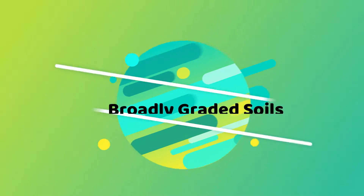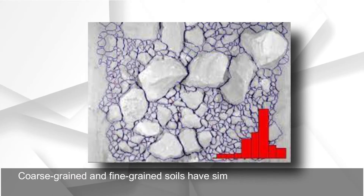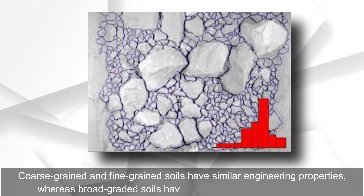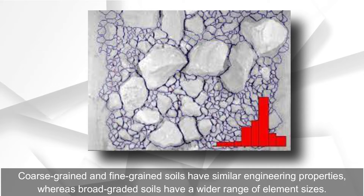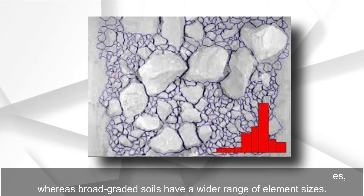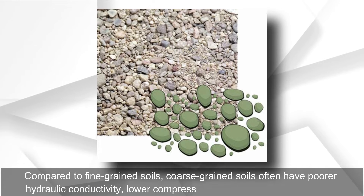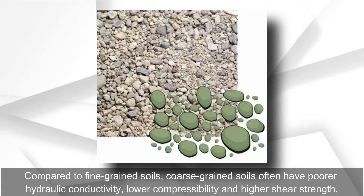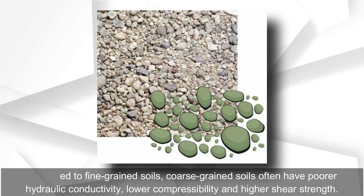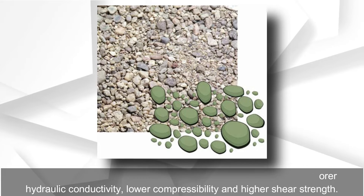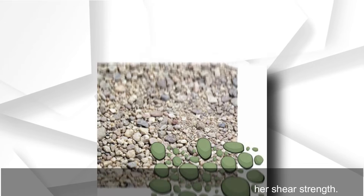Broadly Graded Soils: Coarse-grained and fine-grained soils have similar engineering properties, whereas broadly graded soils have a wider range of element sizes. Compared to fine-grained soils, coarse-grained soils often have poorer hydraulic conductivity, lower compressibility, and higher shear strength.